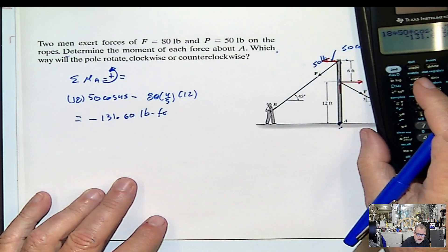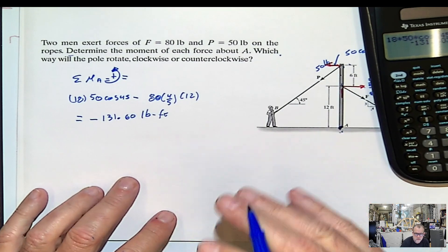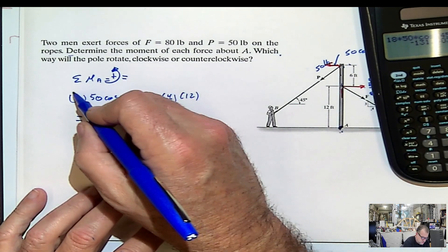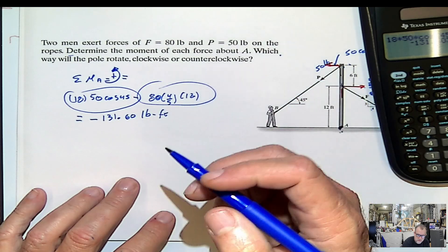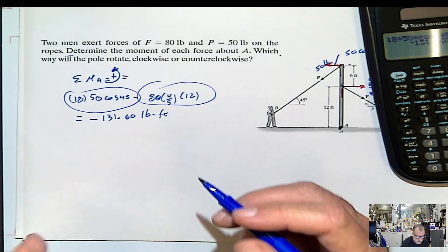This is not actually what the problem is asking. The problem is just asking to determine the moment of each force. Well, you just sum this, you add this, that's going to be the moment of that force. You add this, that's going to be the moment of that force. I'm just calculating the resultant moment.